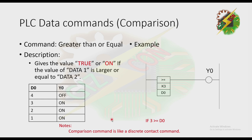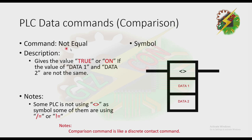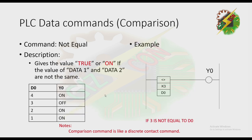We have the command Not Equal — it gives the value true or ON if the value of Data 1 and Data 2 are not equal. Note: some PLCs do not use the standard symbol; some use a different symbol. The command means: if 3 is not equal to D0. From the table: if D0 is 4, Y0 is on because D0 is not equal to 3; if D0 is 3, Y0 is off; if D0 is 2 or 1, Y0 turns on.